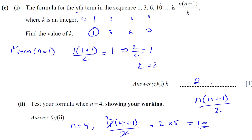2 times 5, which is 10. And that is the fourth term of the sequence. You know that's correct. The formula works.